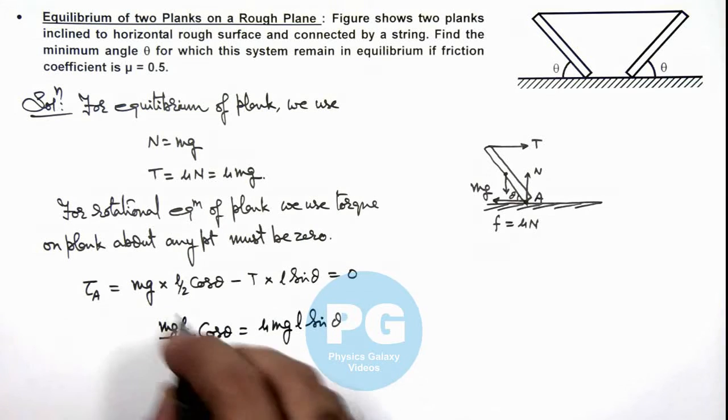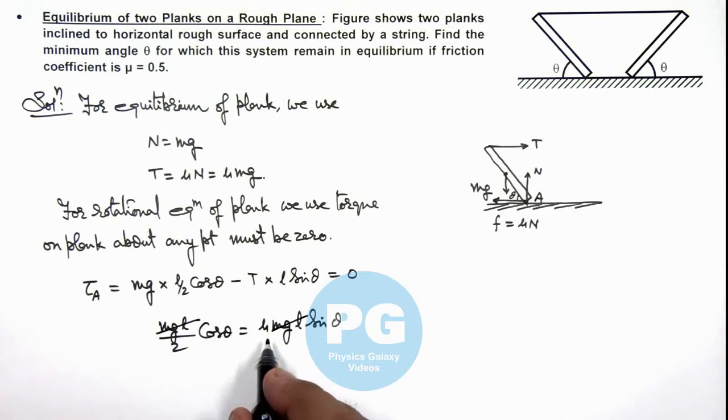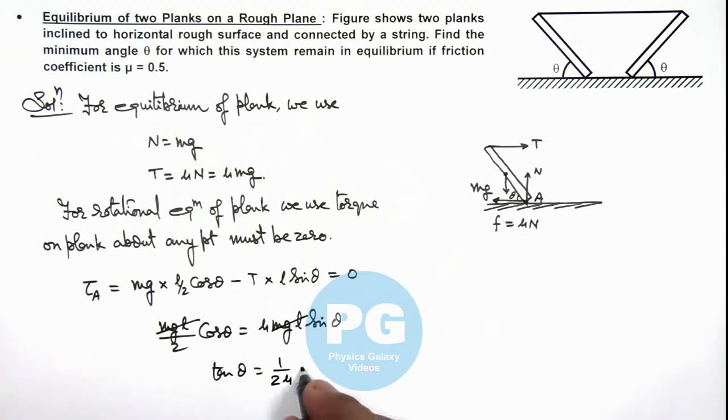So here μmg l, this mgl and mgl gets cancelled out and we can see the value of tan θ we are getting is equal to 1 by 2μ. And as we are given that μ is equal to 0.5, this is 1. This implies the value of θ here will be 45 degrees, that is the result of this problem.